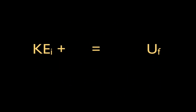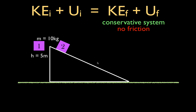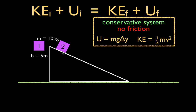Now let's show an example of how we use conservation of mechanical energy. We have two objects — Object 1 and Object 2. They're both standing still, they both have a mass of 10 kilograms, and they're both 5 meters off the ground. We are going to say we have a conservative system, meaning there is no friction and no air resistance. Object one will fall straight down, and object two will slide down an inclined plane with no friction. Let's remind ourselves of our equations for potential energy and kinetic energy.